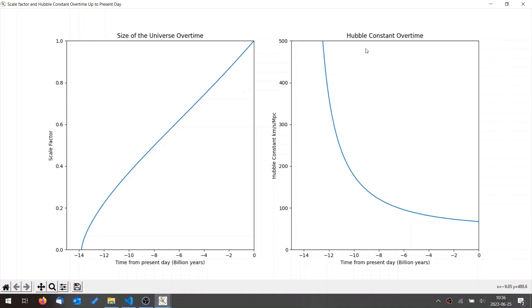Here, we see the Hubble constant. It has also been going down. Today, it's about 67 kilometers per second per megaparsec, but in the past, it used to be a lot higher.